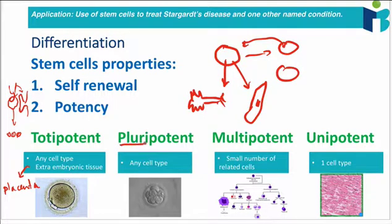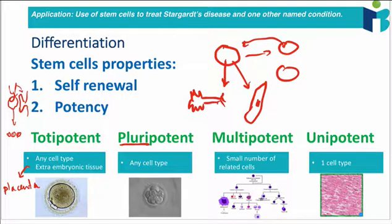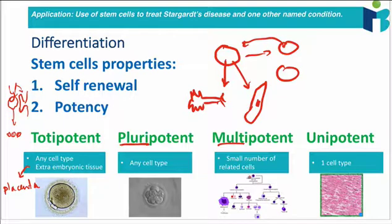Then we get cells that can differentiate into any cell type but not these extraembryonic tissues — we call those pluripotent, so still very strong. We then have the multipotent cells, which are stem cells that can differentiate into a small number of related cells. One example would be the stem cell that can form all the different types of blood cells — white blood cells, red blood cells — those are called hematopoietic stem cells. The hematopoietic stem cell can form these different types of blood cells, but it couldn't go off forming a neuron, for example. That's why it's multipotent.